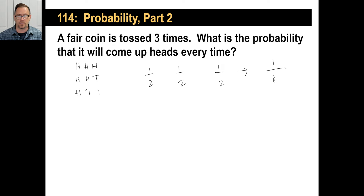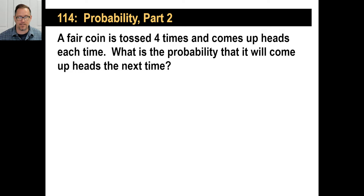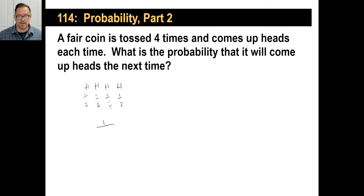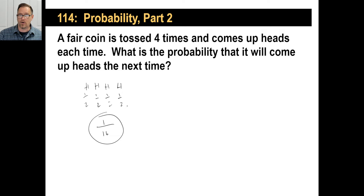If a coin is tossed four times in a row and comes up heads each time, what's the probability it'll come up heads the next time? Well, that has nothing to do with what happened before. Each individual toss is one out of two, so the probability of four heads in a row is one out of sixteen. But the probability on the very next flip is still just one out of two — independent of all previous flips.